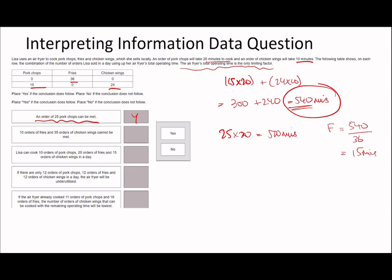The questions are simple from here. For sub-question 2: 10 orders of fries is 150 minutes plus 35 orders of chicken wings is 35 times 10 = 350. So 150 plus 350 is 500 minutes. The statement says this cannot be met - that's wrong. It can be met because you have 540 minutes and this only requires 500.